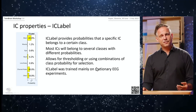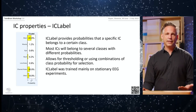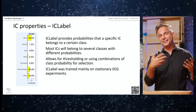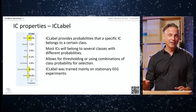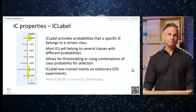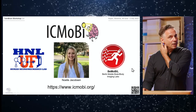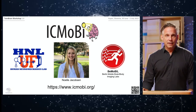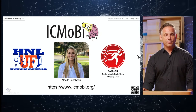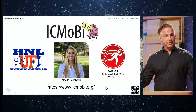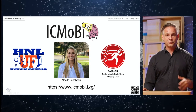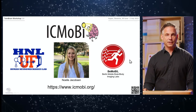One issue is that IC Label was mainly trained on stationary datasets. With very clean IC decompositions from cleaner data, the results look better — so this may be a problem for mobile brain-body imaging experiments. Therefore we started a new label project, IC Mobi, headed by Noel Jacobsen from the University of Florida, Dan Ferris lab, together with our lab. If you have Mobi data meeting certain criteria or are interested in labeling ICs, please join us — it's a community effort.